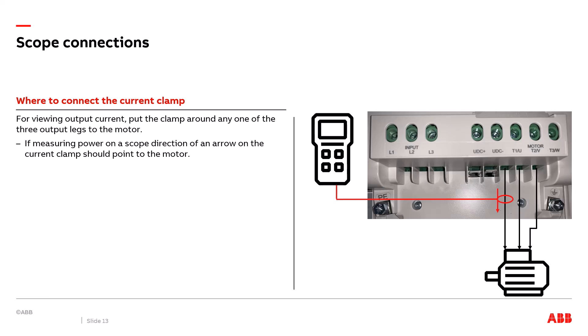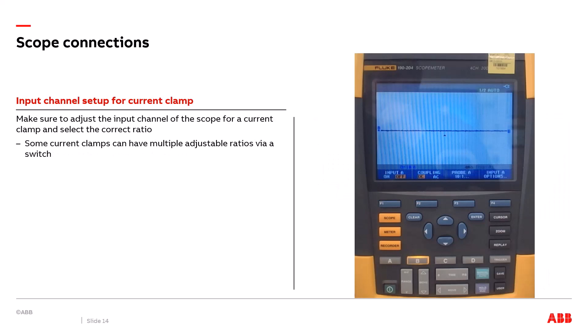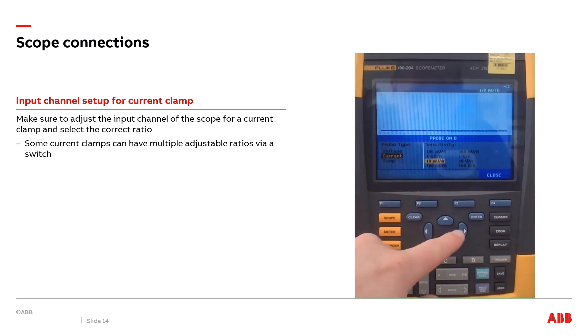Before looking at the current waveform, connect a current clamp around one of the motor wires — do not include the ground wire, only one wire. If measuring output power with your scope meter, make sure the arrow on the current clamp faces the direction toward the motor. Now set up the scope input channel to read the current waveform correctly. The current clamp can be set to read a max of either 40 amps or 200 amps via an adjustable dip switch, providing two different millivolts-per-amp ratios. Set the scope's input channel millivolts-per-amp ratio to match the dip switch setting on the current clamp.